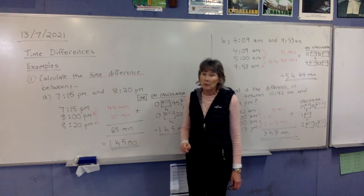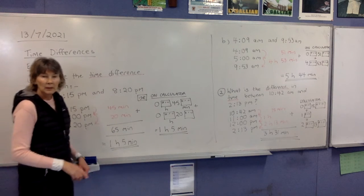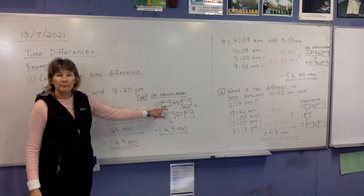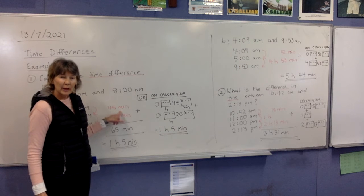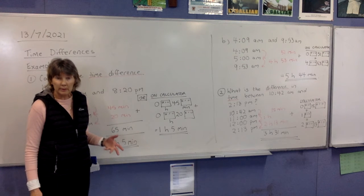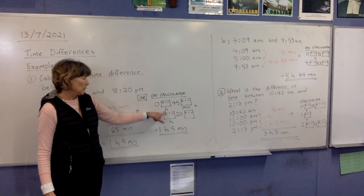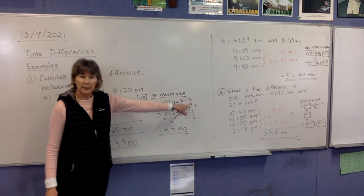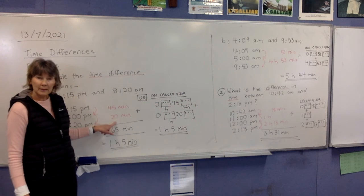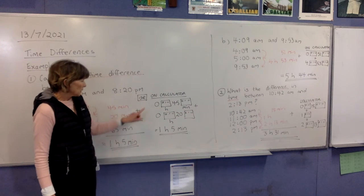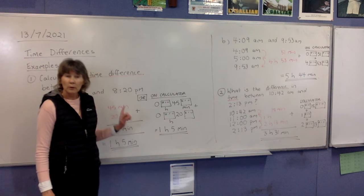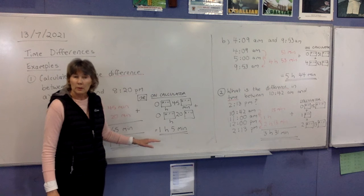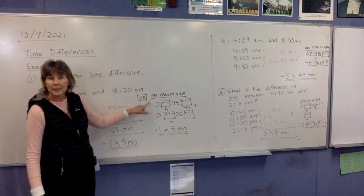Your calculator can be used, but only if you use it correctly. We want to do 45 minutes plus 20 minutes using the degrees-minutes-seconds button. You can't just press 45 and then that button because it thinks you mean hours. We don't mean 45 hours. So we put in 0 hours, 45 minutes: press 0, then the bubble key, then 45, then the bubble key. Then add 0 hours, 20 minutes the same way. Press equals and your answer will come up as 1 hour, 5 minutes — straight off the calculator, as long as you remember to put your 0 hours in first.